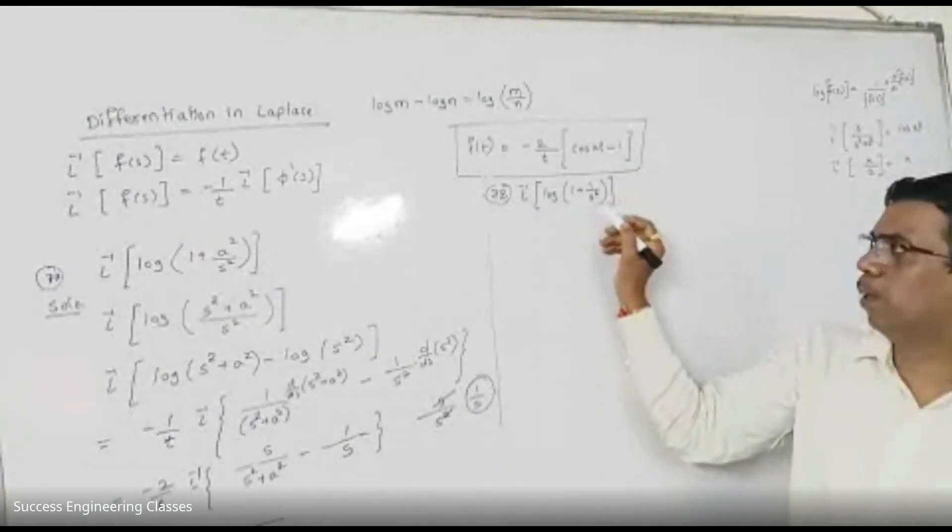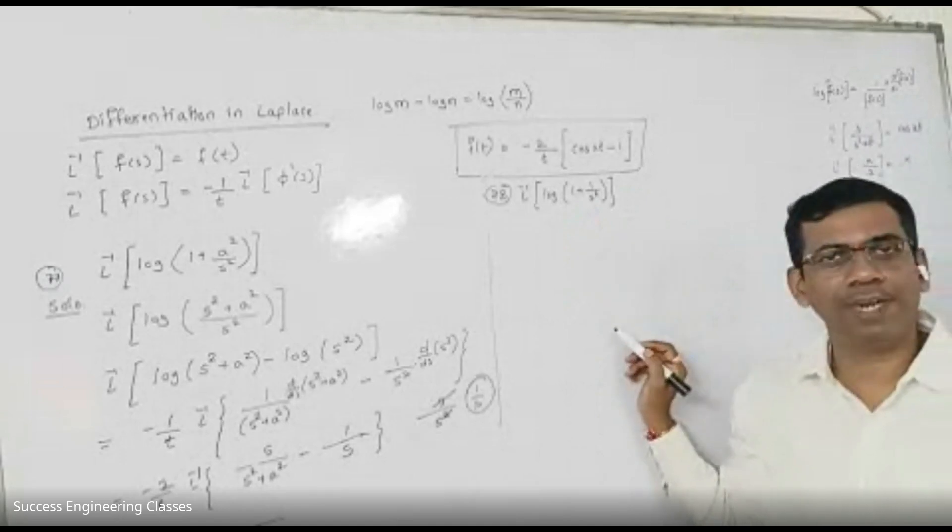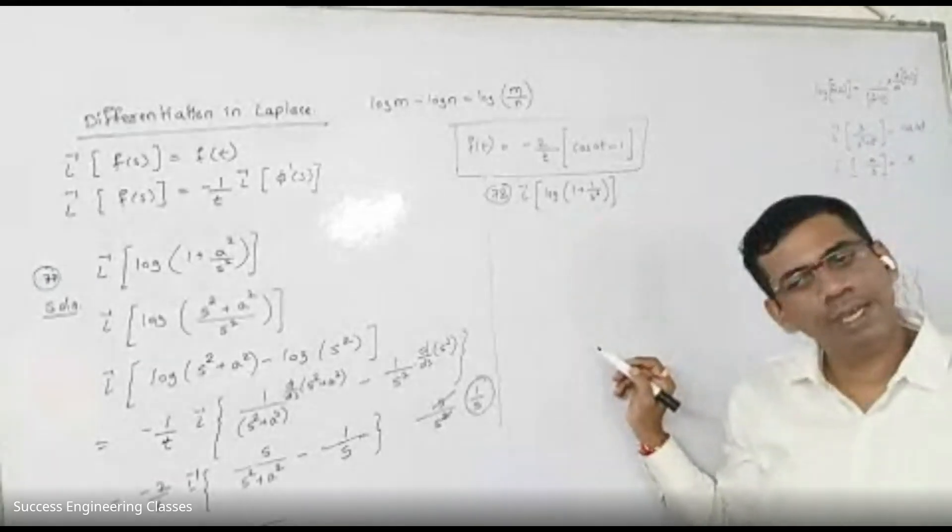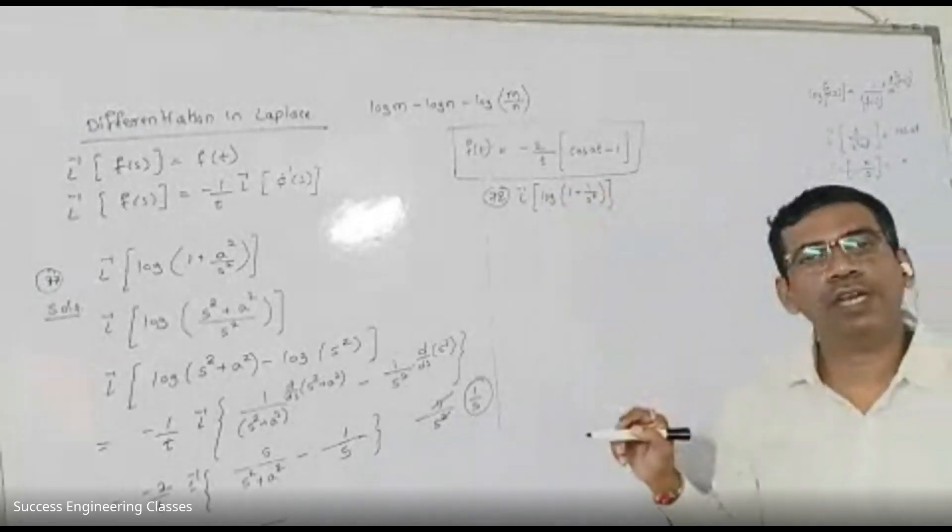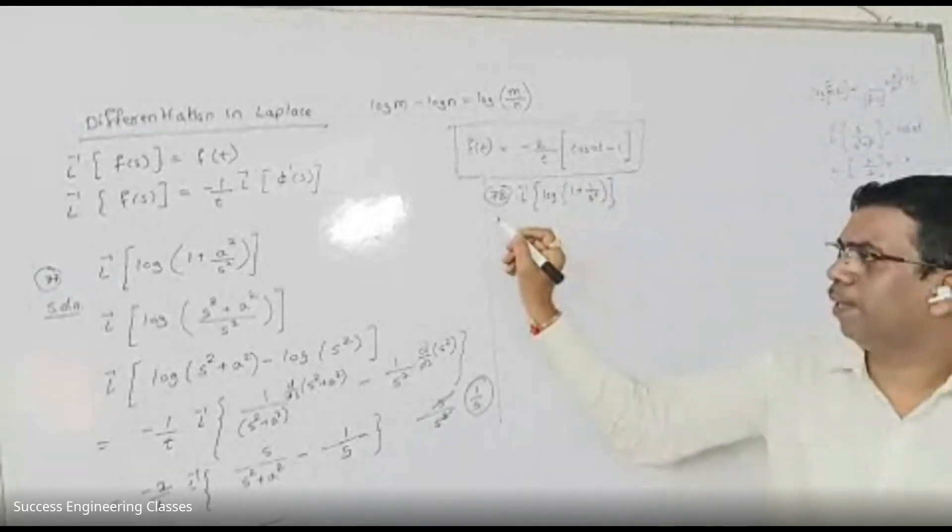Today, we want to move on with log of 1 plus 1 upon A square by A square. The logic remains the same. What did we say? We need the numerator upon denominator.